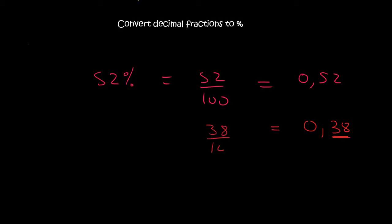and so that becomes 38 over 100. And if you've got 38 out of 100, that's the same as 38%. So we're just doing it backwards.